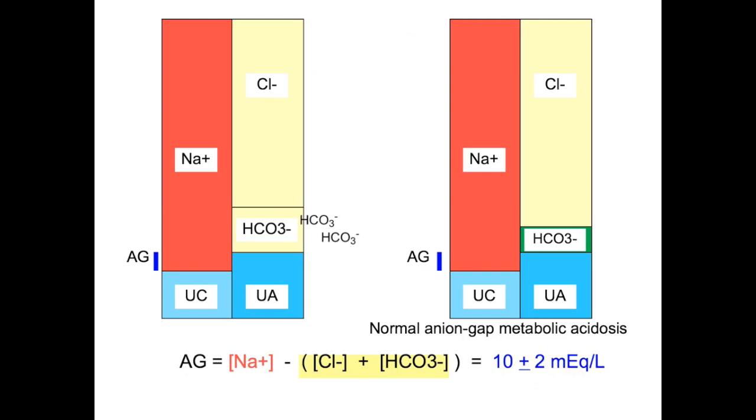The anion gap is useful in determining the cause of a metabolic acidosis. In a normal anion gap metabolic acidosis, bicarbonate is lost directly from the body, for instance via diarrhea or renal tubular acidosis with impaired bicarbonate reabsorption.